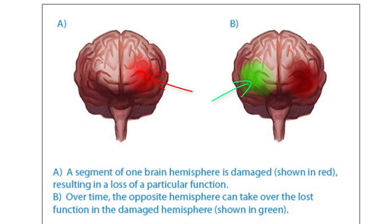When this happens, another healthy, undamaged part of the brain can take over the lost function of the damaged region. This is not true for every situation, but some people recover to a great extent due to neural reorganization through plasticity.